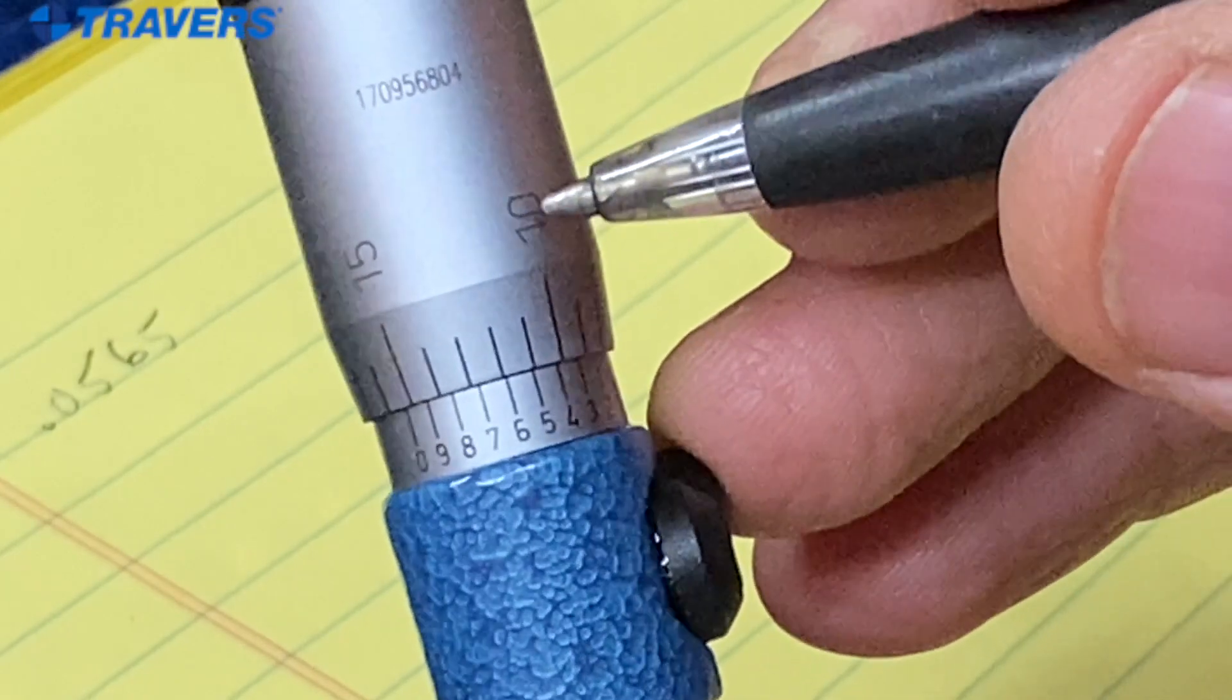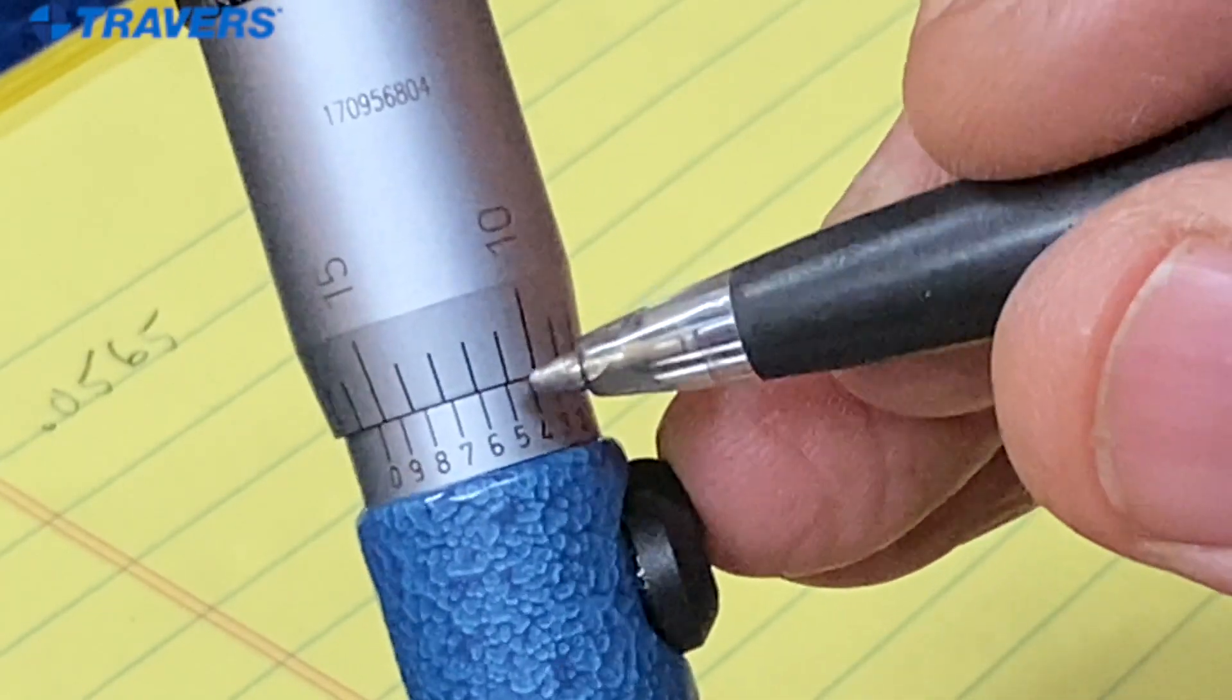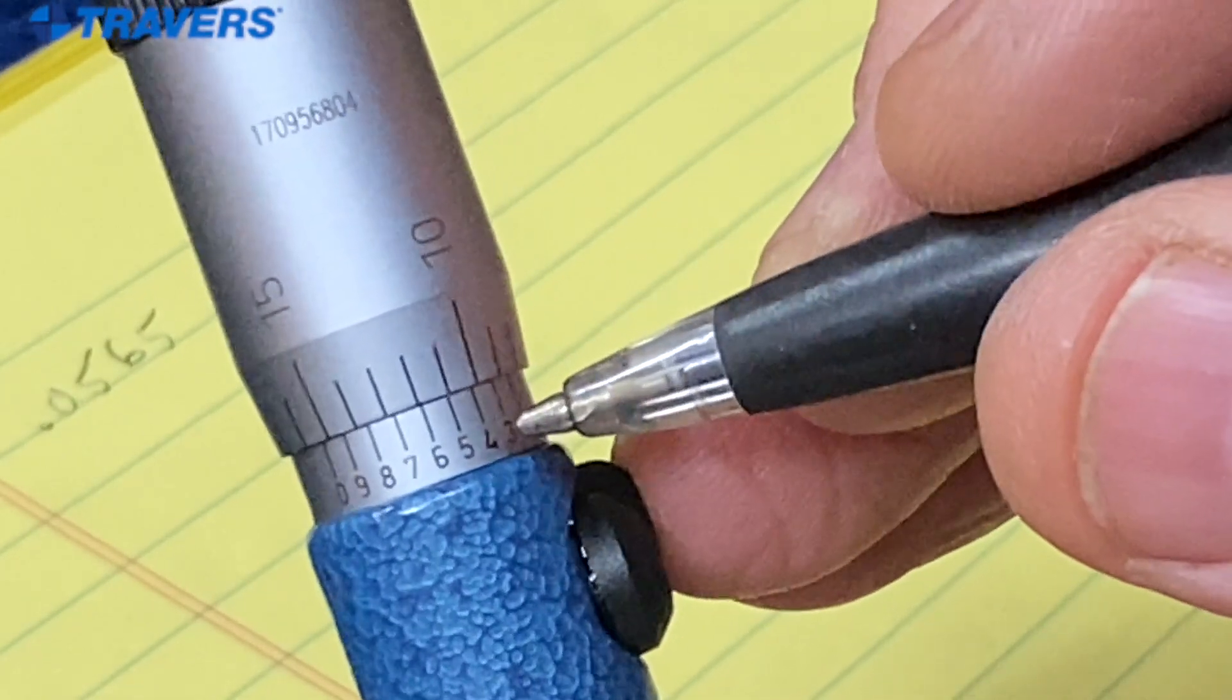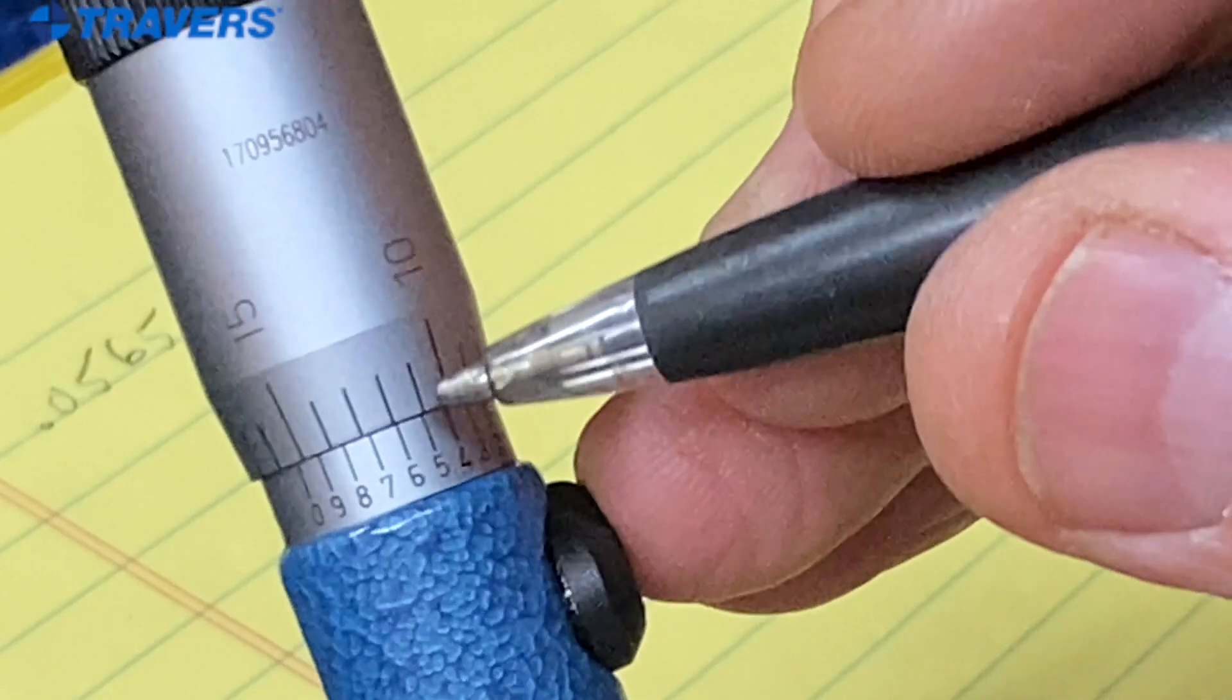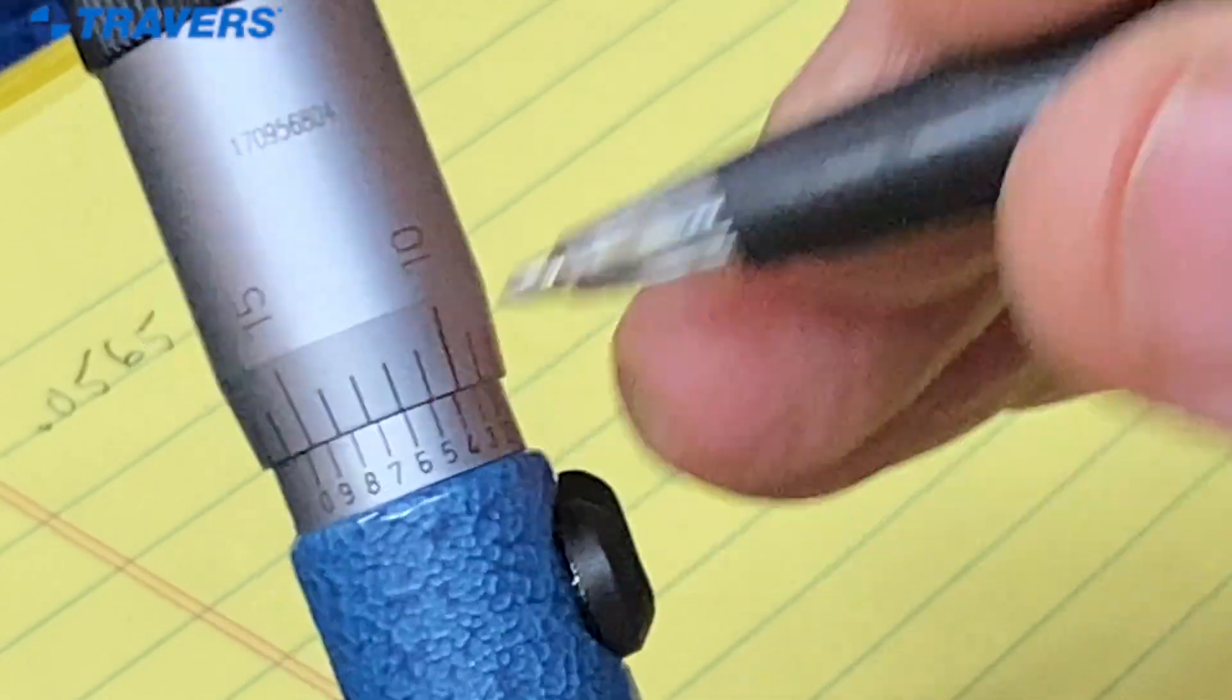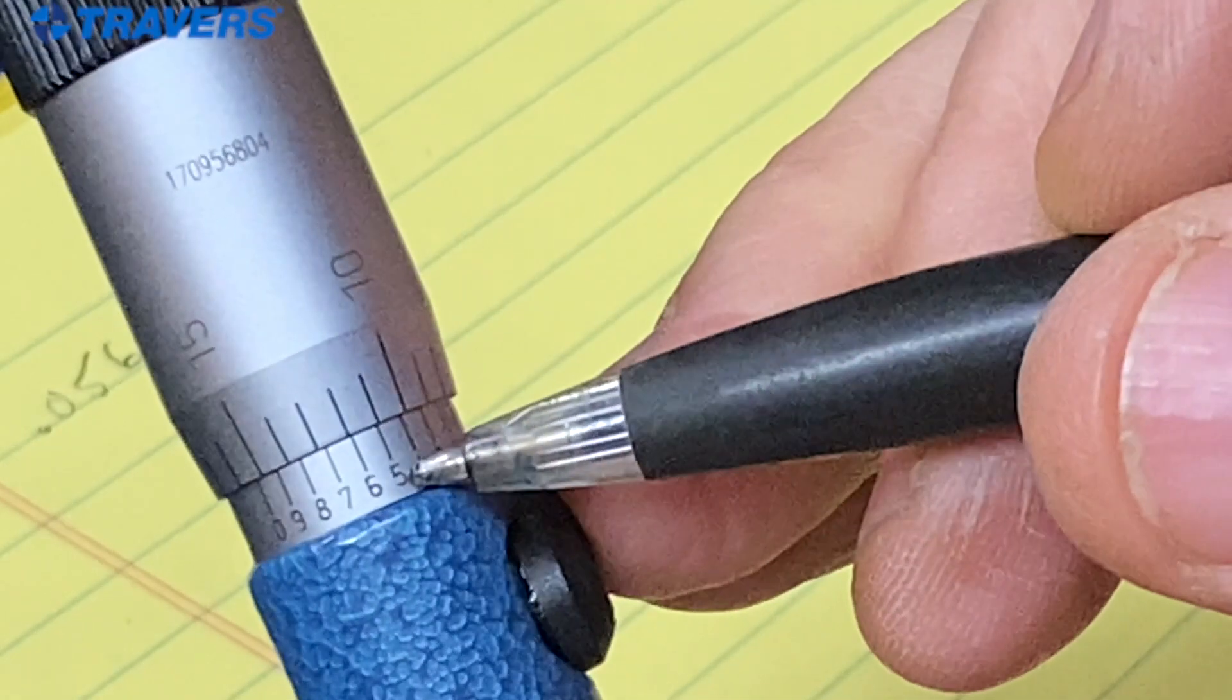Disregarding the number up on the thimble, we're only paying attention to these numbers. So notice that that five lines up very well where the four doesn't. The four doesn't line up with this line and the six doesn't line up with that line. But the five does. So that's what makes the fourth place past the decimal a five.